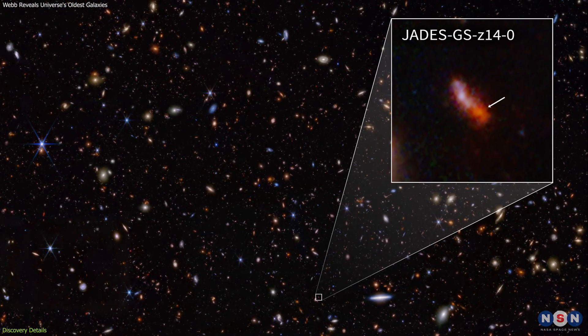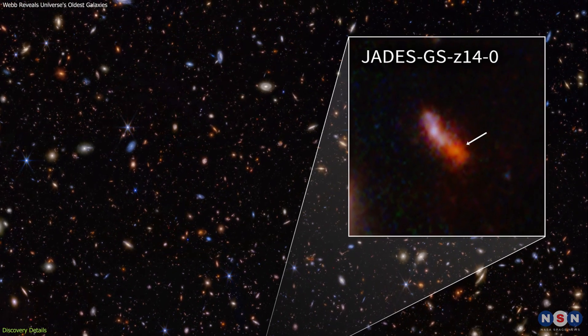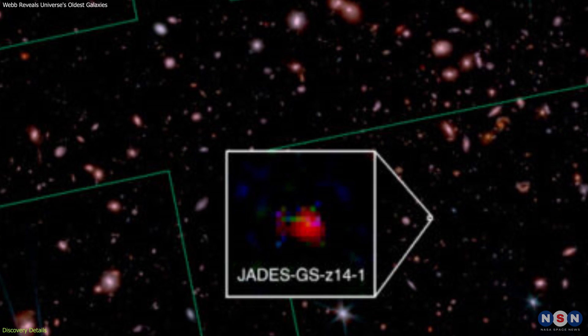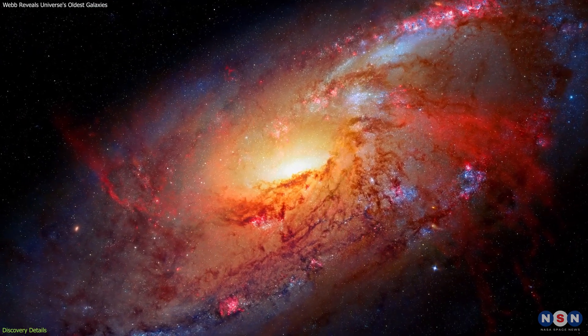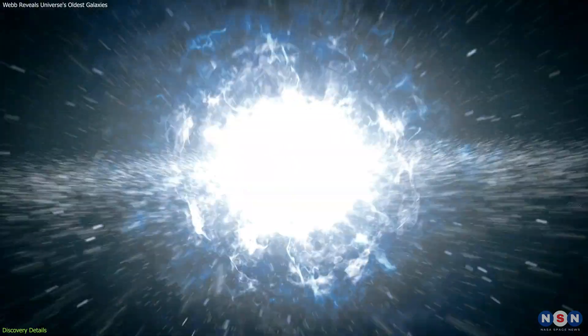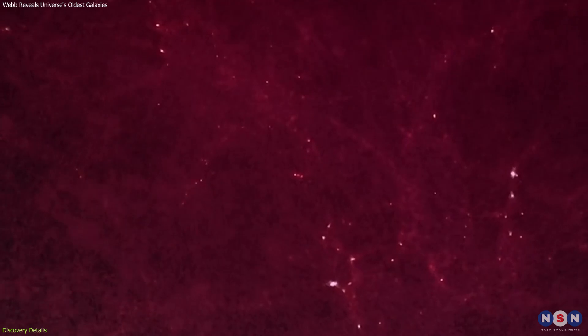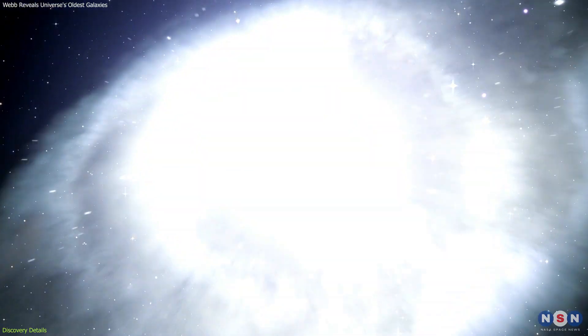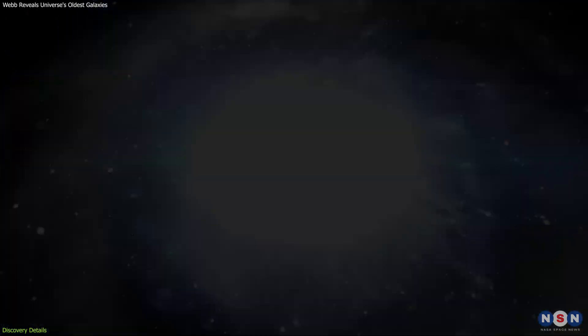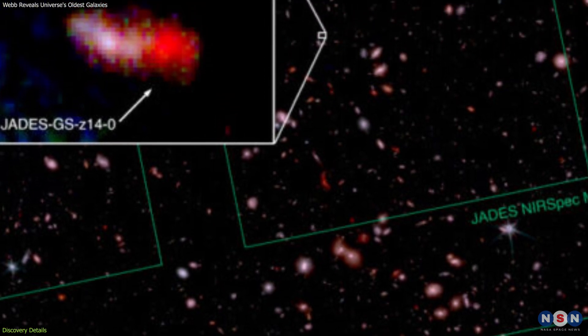The newly discovered galaxies, the first one named JADES-GS-z14-0 and the second one named JADES-GS-z14-1, are not just distant but also astonishingly old. They date back to approximately 300 million years after the Big Bang. To put this into perspective, if the universe's history were a 24-hour day, these galaxies appeared just about two minutes after midnight. This discovery is monumental because it gives us a glimpse into the universe's infancy.